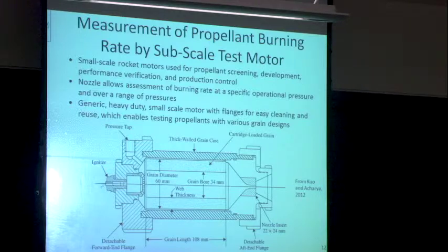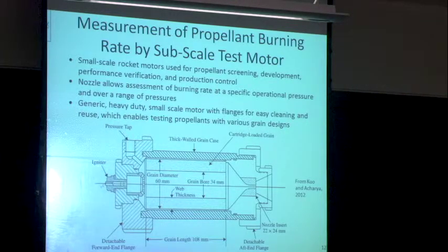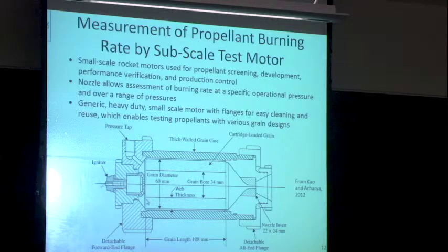People have also used subscale motor tests. This is a simple case with a center-perforated grain about four inches long and a little over two inches in diameter. I adjust the pressure inside by changing the nozzle diameter — smaller for higher pressure, larger for lower pressure. I define the web thickness as the distance from the inner surface to the outer surface of the grain, and I measure how long it takes to burn through that distance.